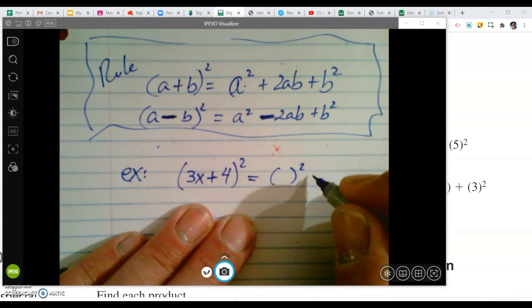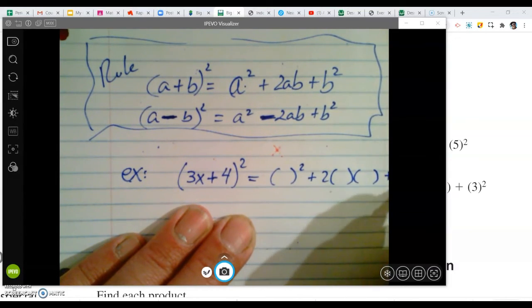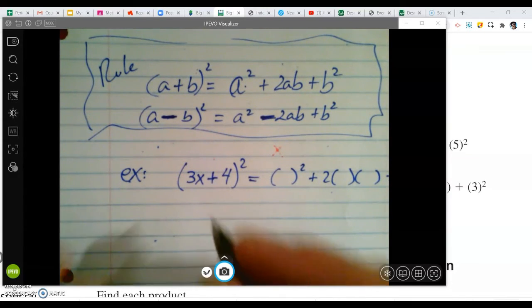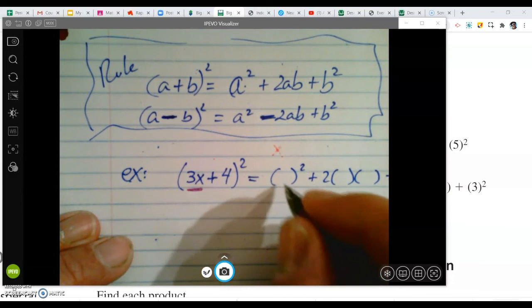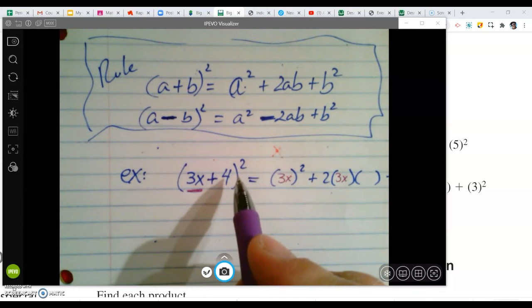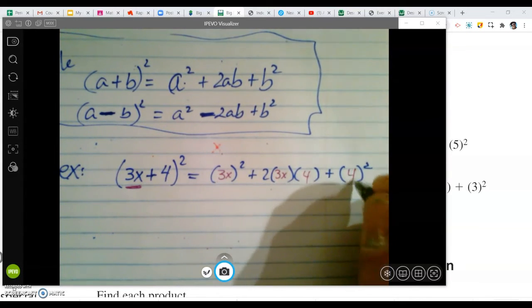Now, for this one, instead of A, we have a 3x. I want to show you that that does not make too much of a difference. Okay, so instead of A and B, we have a 3x and we have a 4. So we're going to put 3x here, 3x here. And then instead of B, we have a 4. So we'll put 4 here and 4 there.